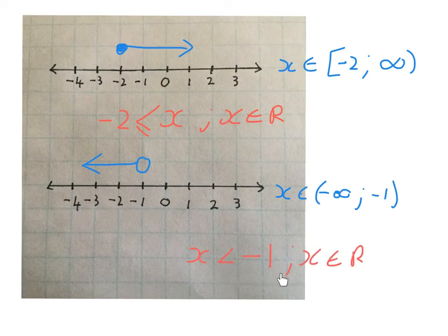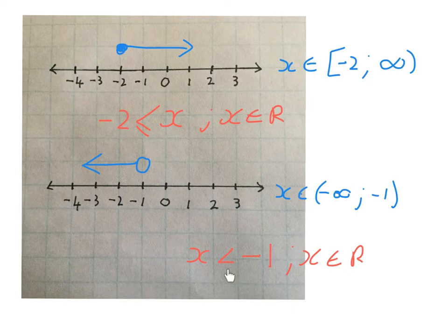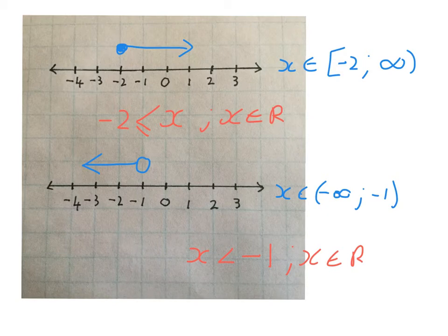Here again is a third way of writing: we're looking for numbers from minus 1, excluded, and everything to the left. The inequality says: the numbers we're looking for are smaller than minus 1. Then: x is an element of the real numbers, x is an element of a set, and interval notation — three ways of representing the same thing. The syllabus says you must be able to represent things in different ways, and that's what this is all about.